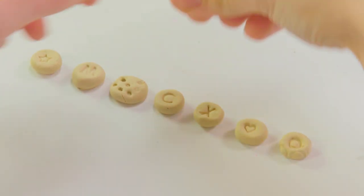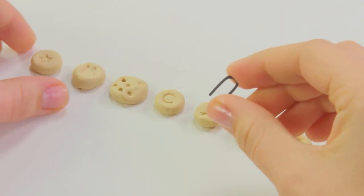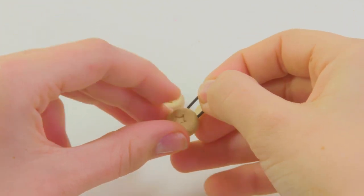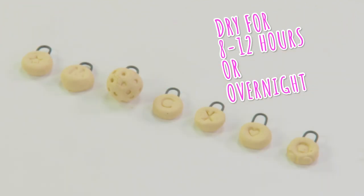Once you're happy with the charms, push a pendant hook halfway through each. Make sure to leave enough space under the hooks for the bracelet cord. Let your charms dry for eight to 12 hours or overnight.